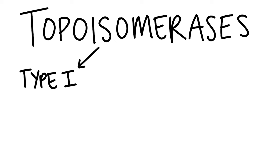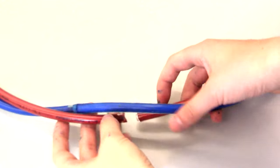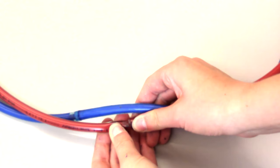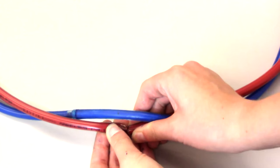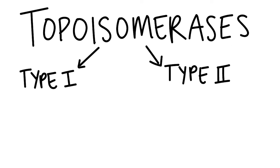There are two main categories of topoisomerase: type 1 and type 2. Type 1 topoisomerase breaks one of the two DNA strands and passes the other strand through the gap. This increases or decreases the linking number by one. Here, the top DNA double helix represents the structure before the topoisomerase added a twist, and the bottom DNA double helix is after the enzyme completes the reaction. Type 1 topoisomerase reactions do not require additional energy.